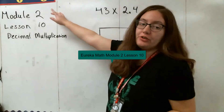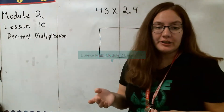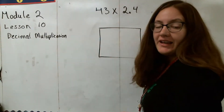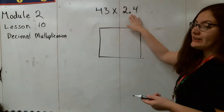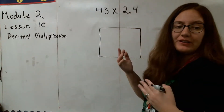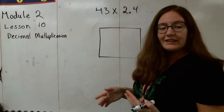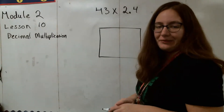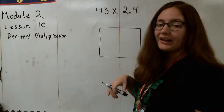Hi 5th grade, today we're going to be doing Module 2, Lesson 10. We're taking everything we know about multiplication with the area models and the standard algorithm, and we're starting to use this with decimals. You're going to see that multiplying whole numbers and multiplying decimals are very similar — it's just a little bit different. We're going to walk through this today, and it should be a fairly quick lesson.